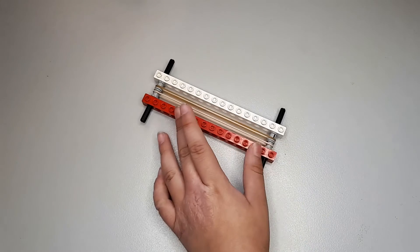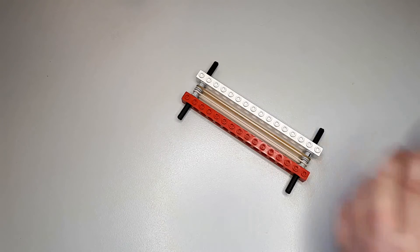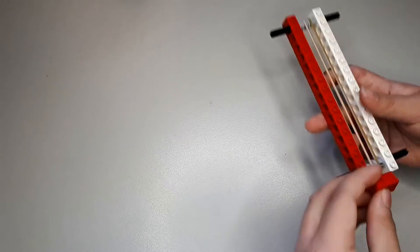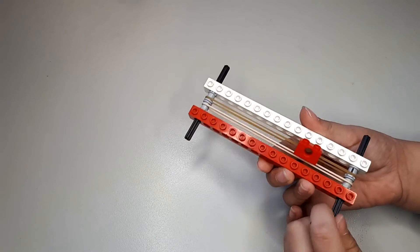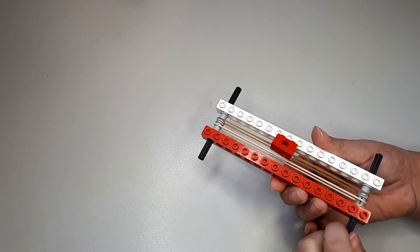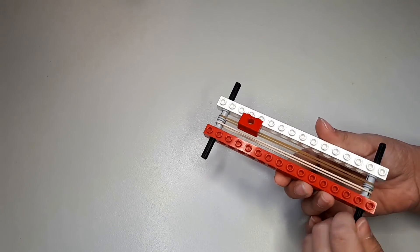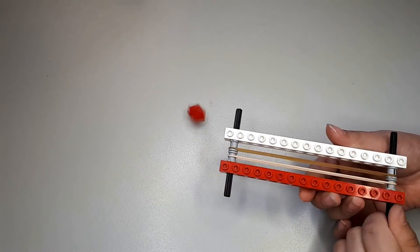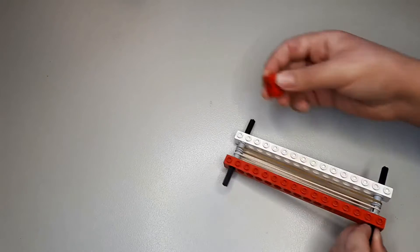So this is the conveyor belt we are going to be making today. As you can see, when I move this axle it moves the rubber band, which is the belt part, and moves the parcel. To make this, we will need these pieces.